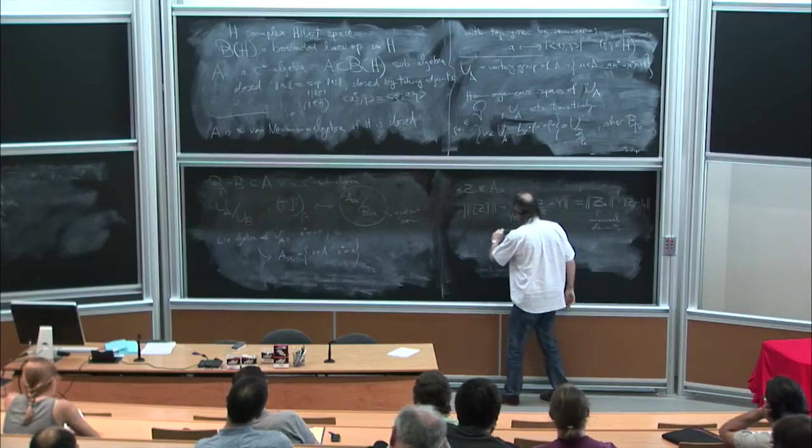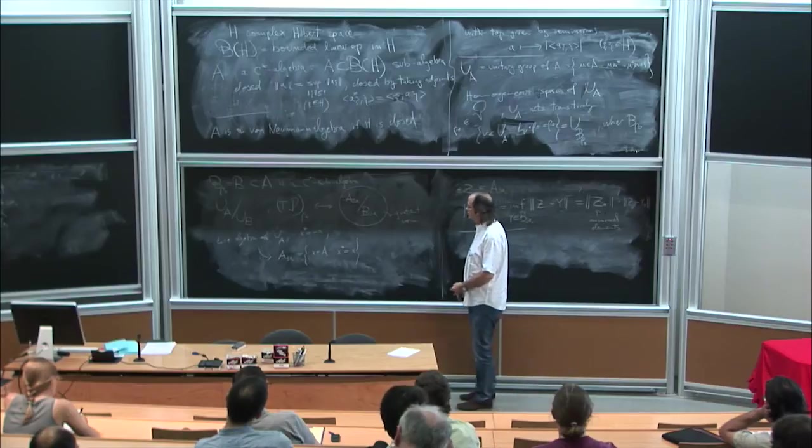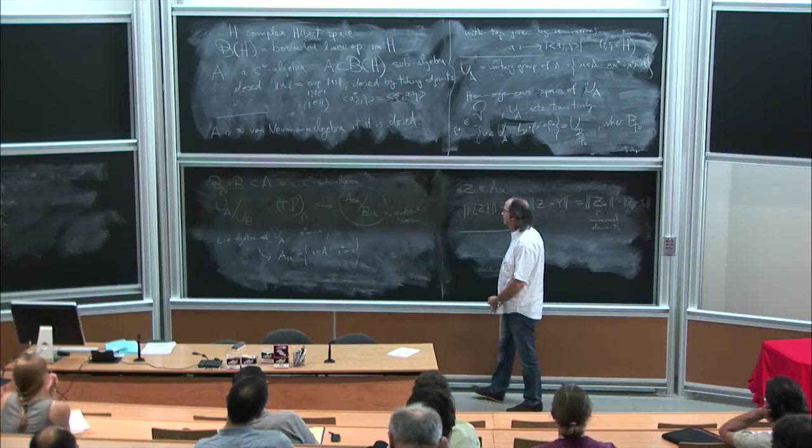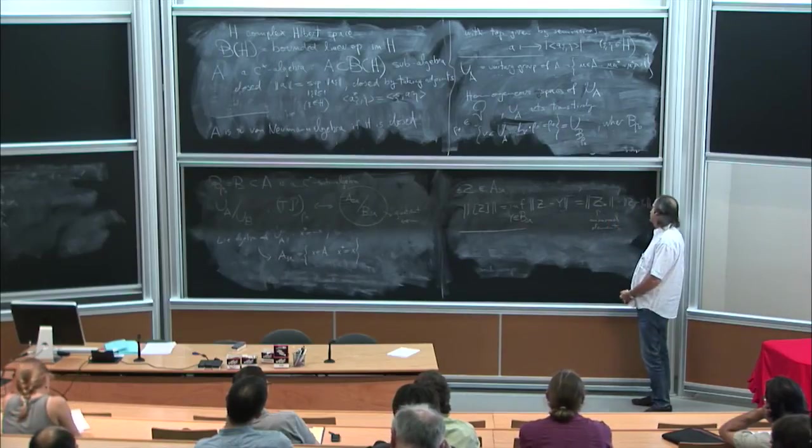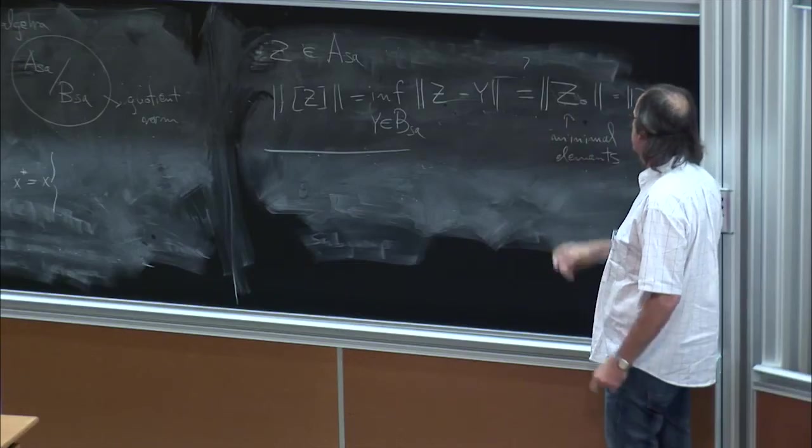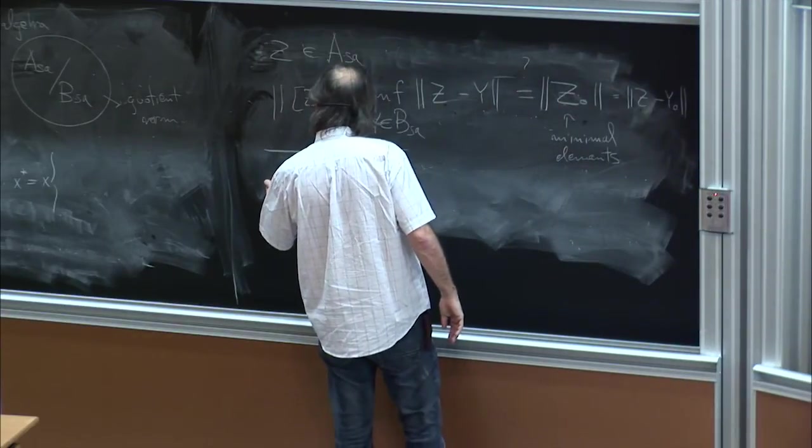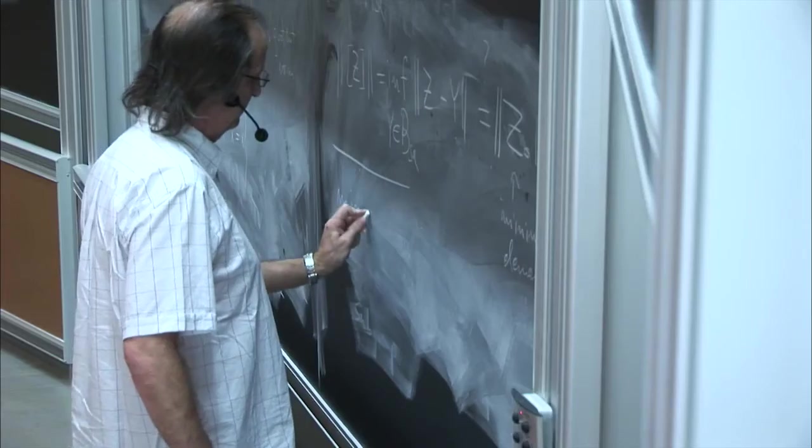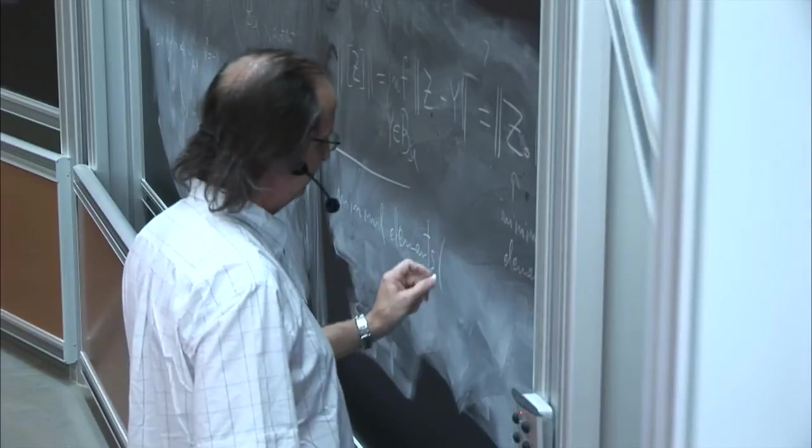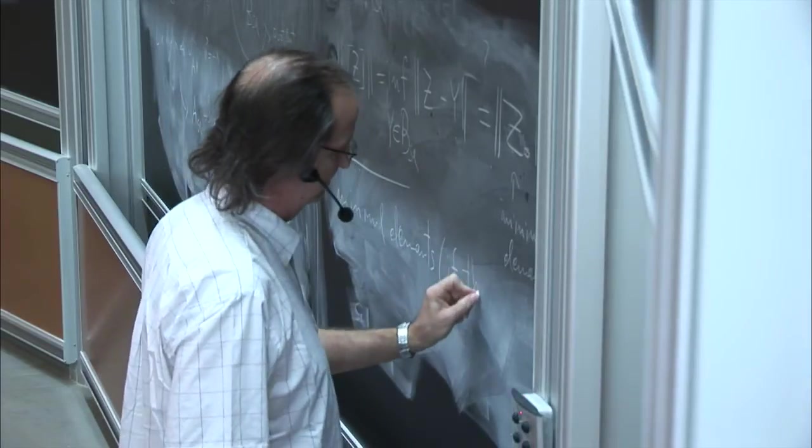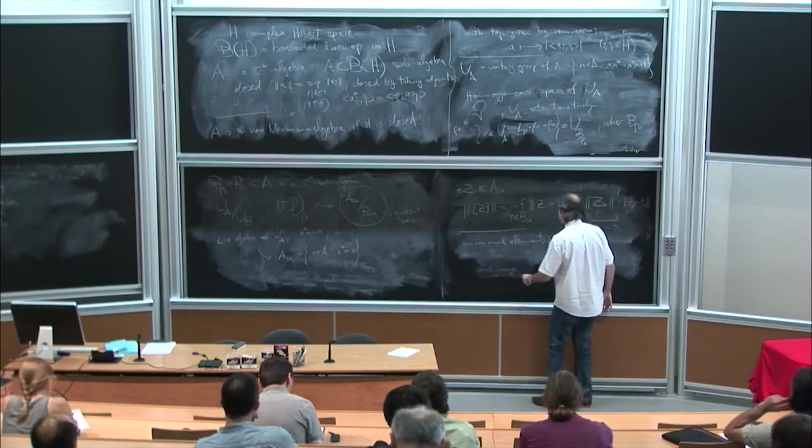And I mean, the main question here is if in every class, in every element in the quotient, there exists a minimal representative. Or equivalently, if the distance between any class and the subalgebra can be achieved at an element. Due to the fact that this norm is not well behaved, I mean it is not smooth, it is not convex, so we do not expect that minimal elements are unique. In general, minimal elements, if they exist, in general are non-unique.